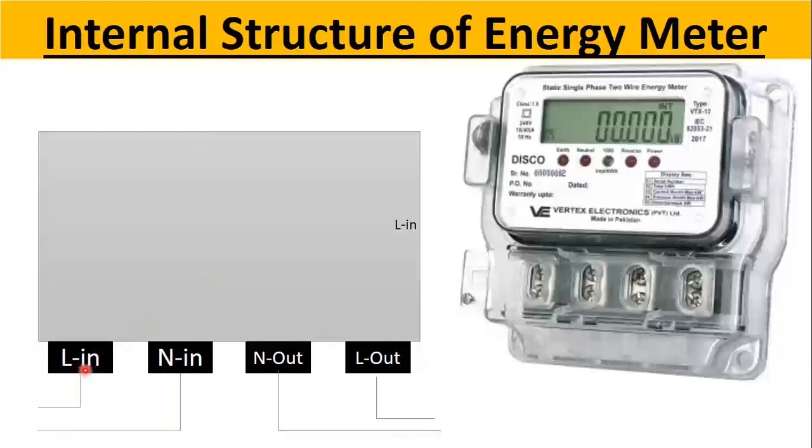We have four terminals: one is line in or phase in and neutral in. These two are coming from the utility or the distribution company.